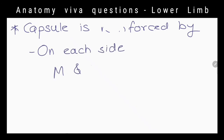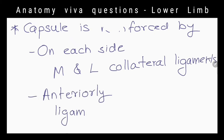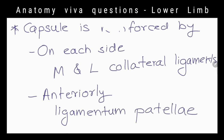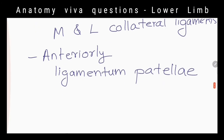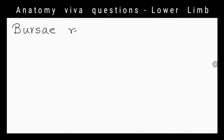What are the structures that reinforce the capsule of the knee joint? On each side by medial and lateral collateral ligaments. Anteriorly it is strengthened by the ligamentum patellae, and on each side of the patella it is strengthened by expansions from the tendons of vastus lateralis and vastus medialis.